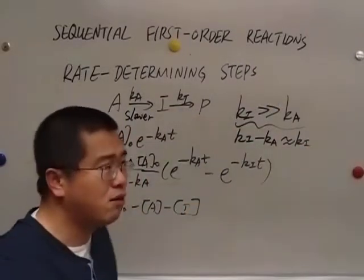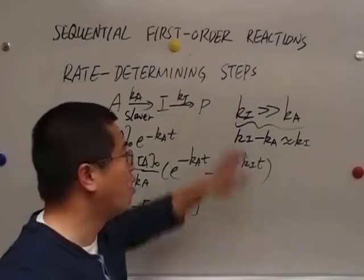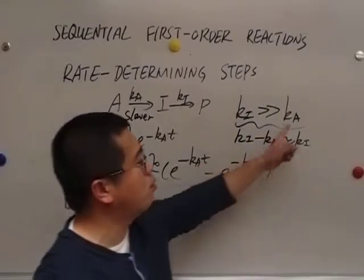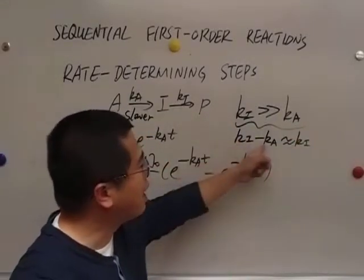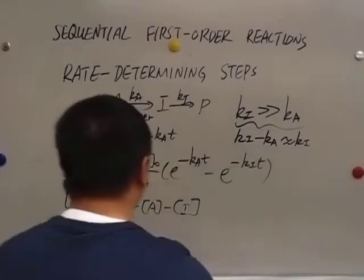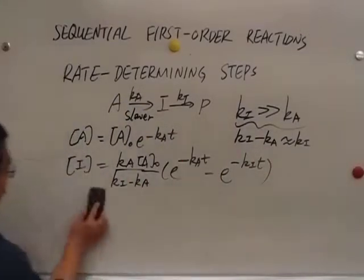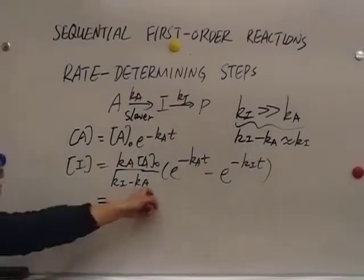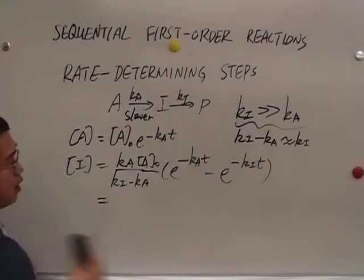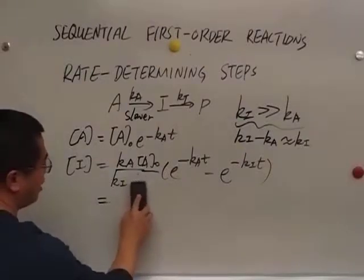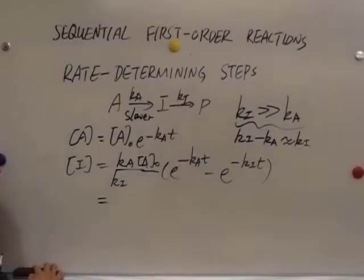I'm going to give you a numerical example. If 1 million is much greater than 1, then 1 million minus 1 is roughly 1 million. So we will be able to make approximation here. Ki minus Ka is simply just Ki here.